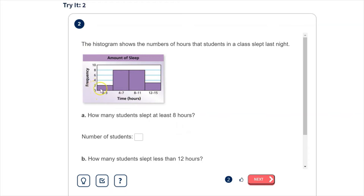So we can see that 2 people slept 0 to 3 hours, 8 people slept 4 to 7 hours, 8 people sleep 8 to 11 hours, and 3 people slept 12 to 15 hours.